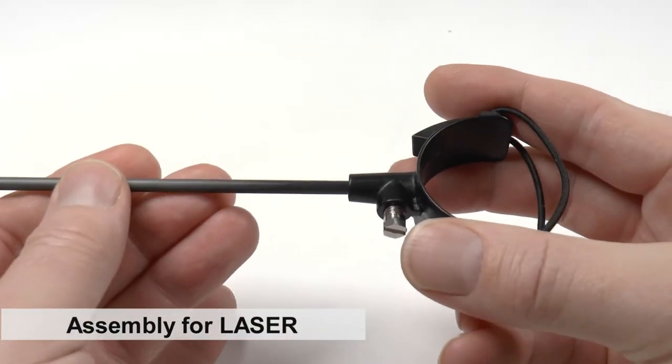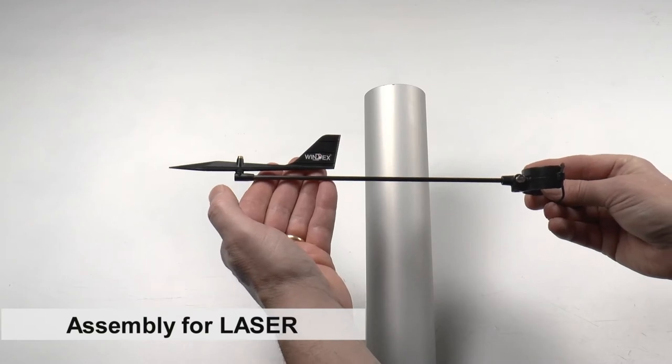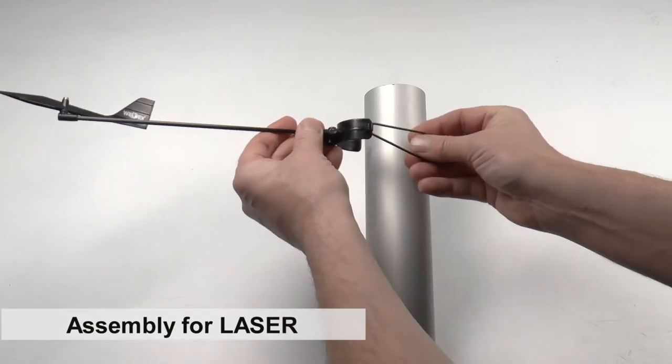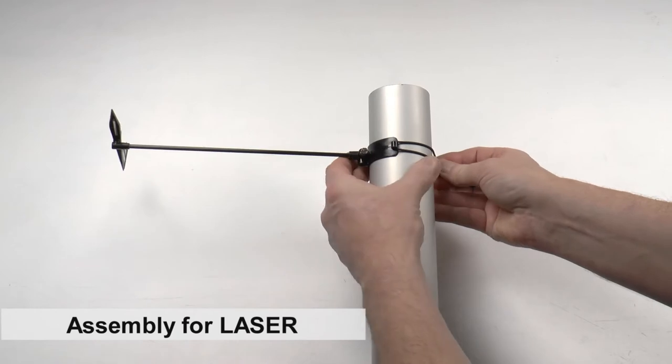With the vane in place you can insert the shaft in the mast fitting and then we can assemble the Windex using the flexible strap to the mast.